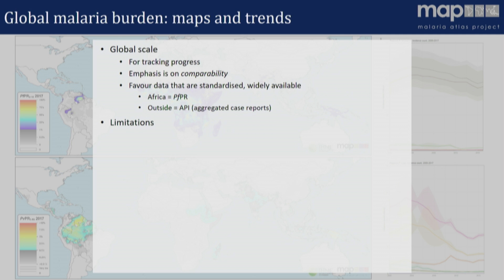Both of these have limitations. Parasite rate — and Noor went into more detail so I can be quite brief here — we have this issue of latency. Parasite rate takes a long time from when a child is bled and RDT is carried out to that data becoming available for us as modelers to use: one year, two years. So this is not a timely type of data; it's not very good for real-time monitoring. PR is also neither directly representative of the intensity of transmission nor of clinical burden — it's an intermediate metric that's convenient to measure but doesn't necessarily tally with what programs might really be interested in tracking.